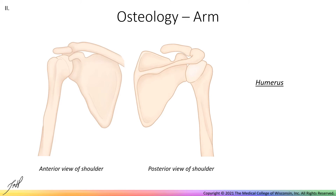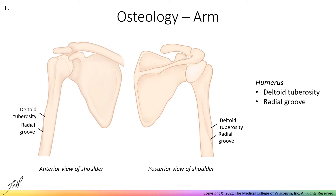Along the shaft of the humerus is a bump called the deltoid tuberosity, and as you may have guessed, this is a site of attachment for the deltoid muscle. We can also see a groove spiraling inferiorly along the shaft, which is called the radial groove and is a channel in the bone where the radial nerve runs.